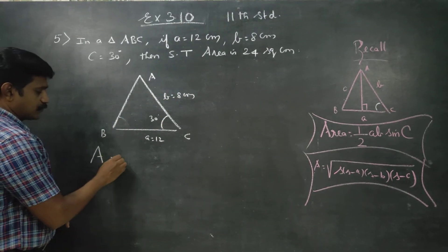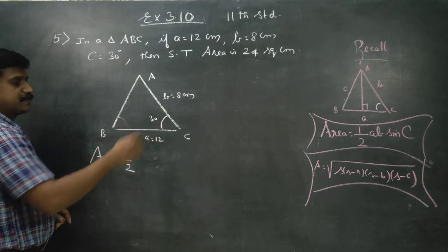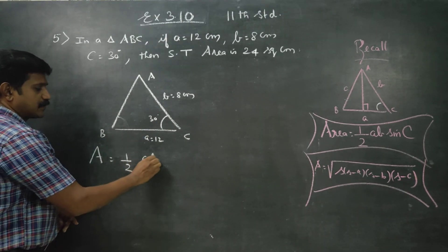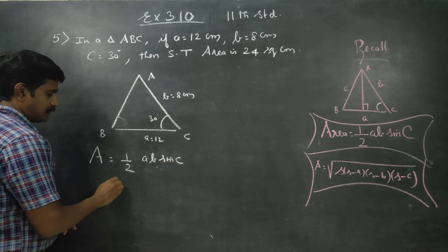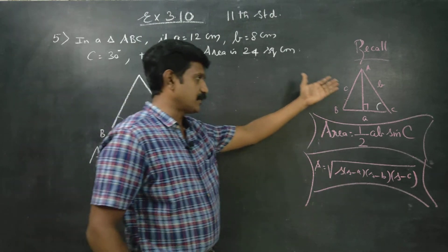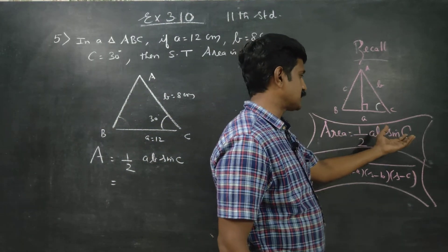Therefore, area is equal to half times A times B times sin C. You have to just recall this formula. Area of the triangle is half A times B times sin C. If you have sides with an included angle, you use the same formula.